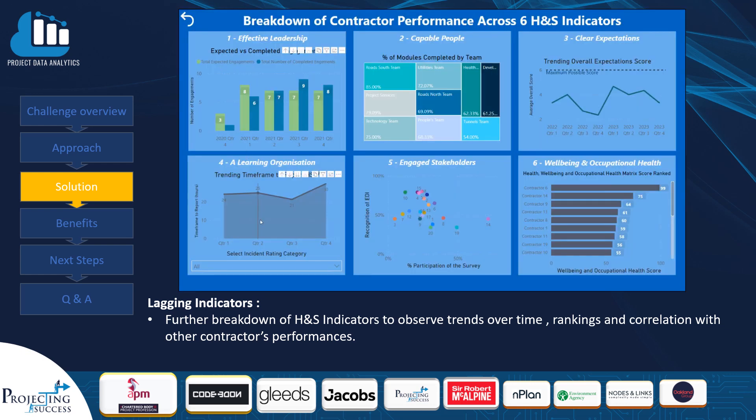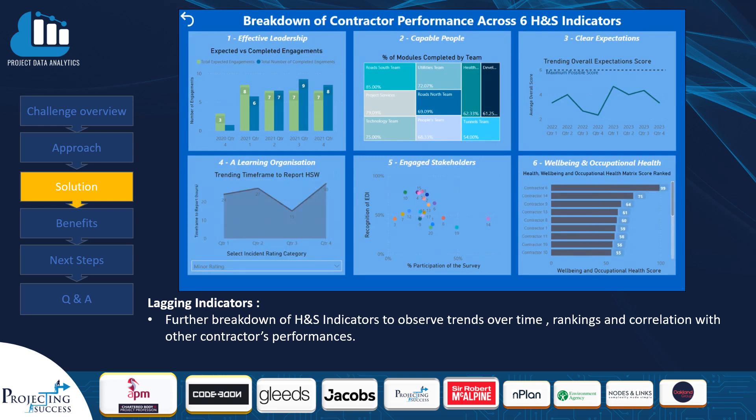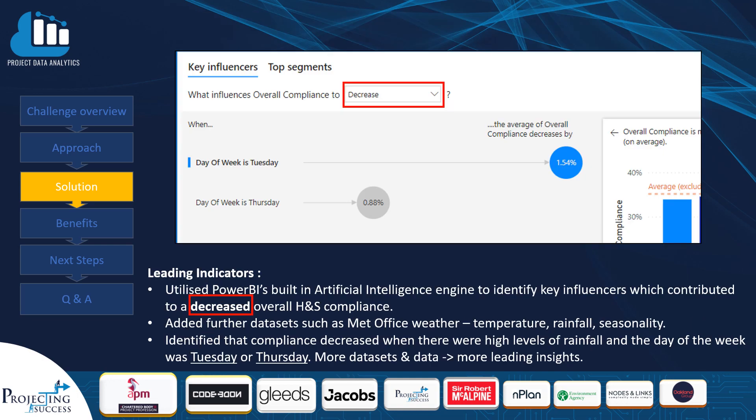This is useful to track trends following the implementation of an improvement plan — to see if it has been a success or failure and what can be learned from it. Having reported on past data, we then turn to reporting leading indicators. Using Microsoft's AI engines, we looked to identify key influences that contributed to a decrease in health and safety compliance. With our inspection and Met Office weather data, we identified that health and safety compliance tended to decrease with high levels of rainfall and if the day was a Tuesday or Thursday. The idea is that with more data provided through the PowerApp, the AI has a feedback loop to train itself and provide better future recommendations about what might cause a decrease in safety compliance.